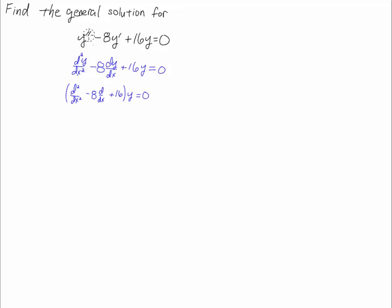So the y double prime is d squared over dx squared times y being applied to y minus 8 dy dx plus 16y. So I can view this on the left hand side as a differential operator being applied to the y. That's just a fancy term for saying I factor out the y and I'm just applying this operator to y.